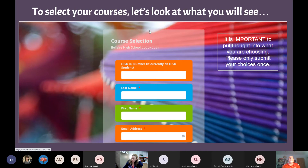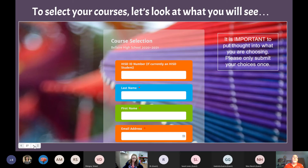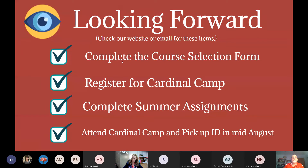Now we're going to begin selecting your courses. This is what the online course selection form looks like. It's important that you put thought into what you're choosing. The counselors are going to take this information and make a schedule with it. You want to do your best today so you can have the best possible first day of school next fall. You need to complete the course selection form — we're about to go through that in just a few minutes.